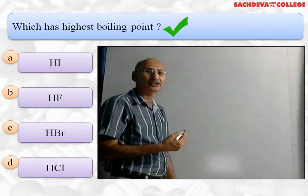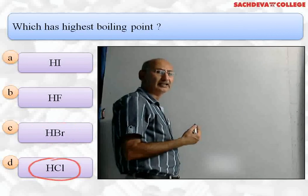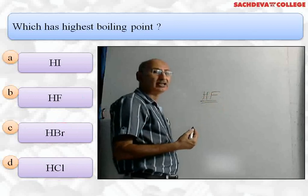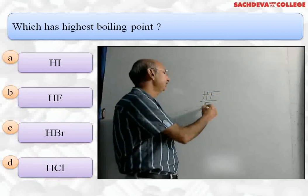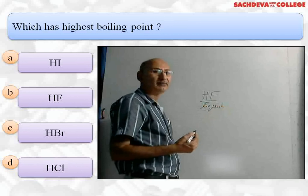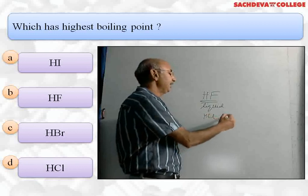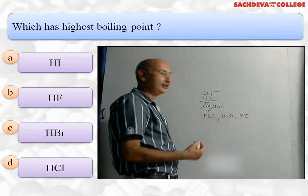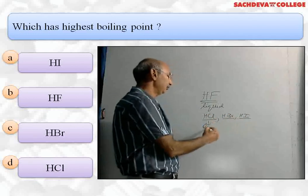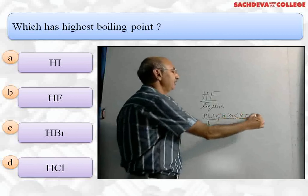Next question: which of the following has the highest boiling point — HI, HF, HBr, or HCl? The correct answer is HF, because HF molecules are associated with intermolecular hydrogen bonding, making it a liquid with the highest boiling point. HCl, HBr, and HI do not form hydrogen bonds and are gases with low boiling points. Among the gases, the boiling point order is HCl < HBr < HI based on increasing surface area.